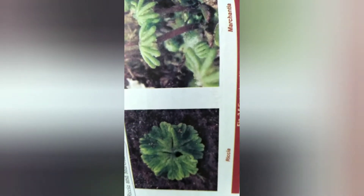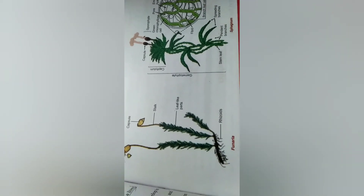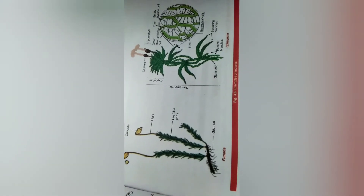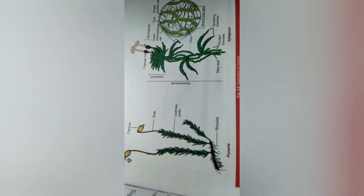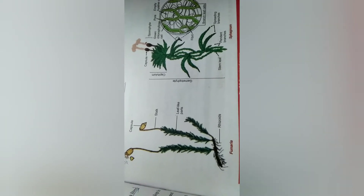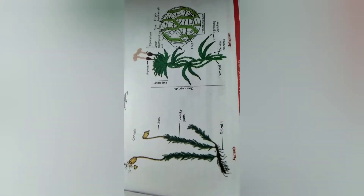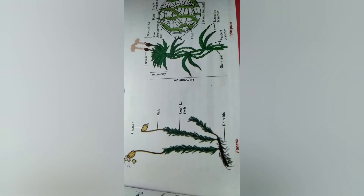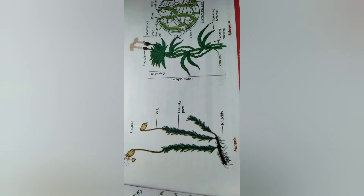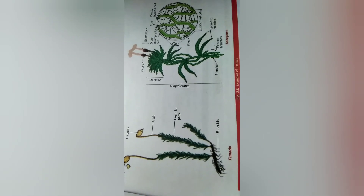Now I will show you the Musci — mosses. These are the examples of mosses. One is Funaria and the other is Sphagnum. These are the examples of mosses. In my next class I will discuss the next three divisions of the plant kingdom — pteridophyta, gymnosperm, and angiosperm. You can see Funaria with spiral leaves and capsules present, and Sphagnum. So stay tuned for the next video.